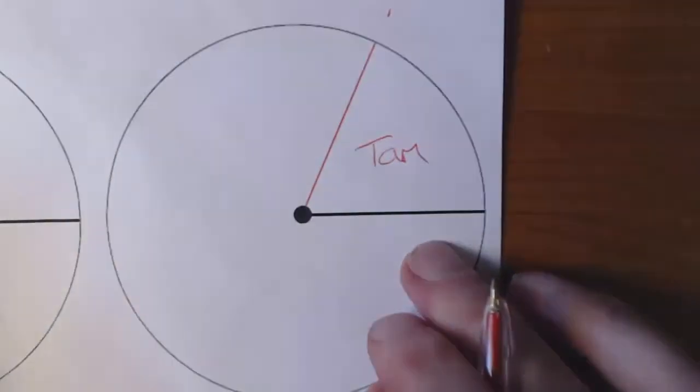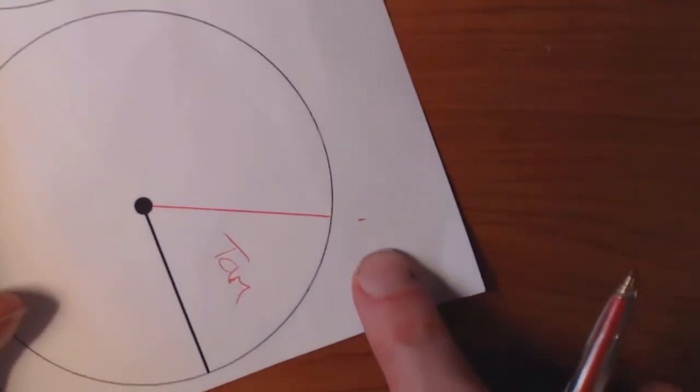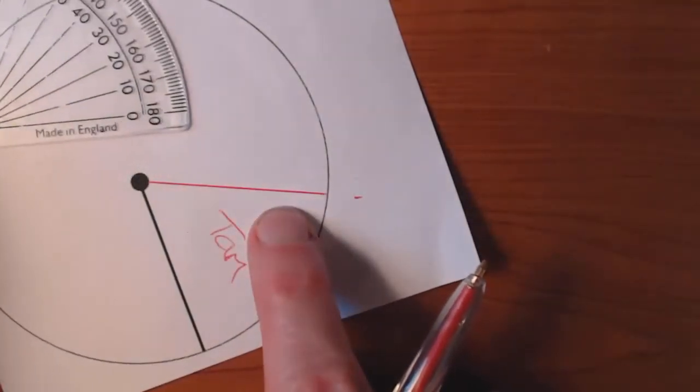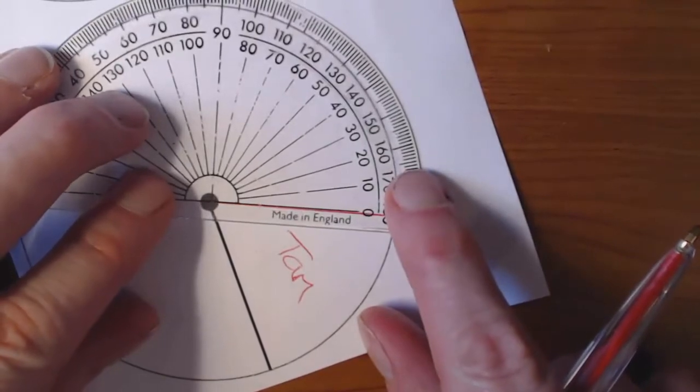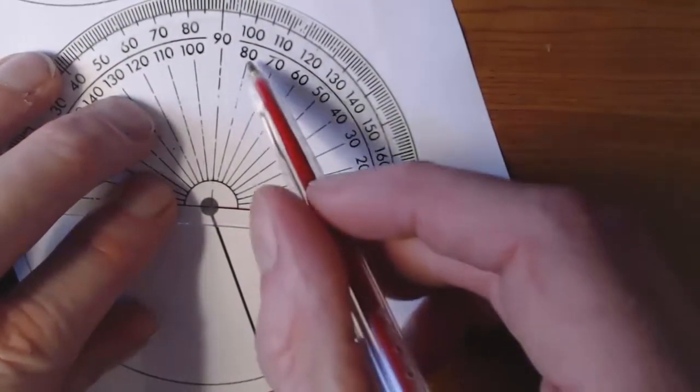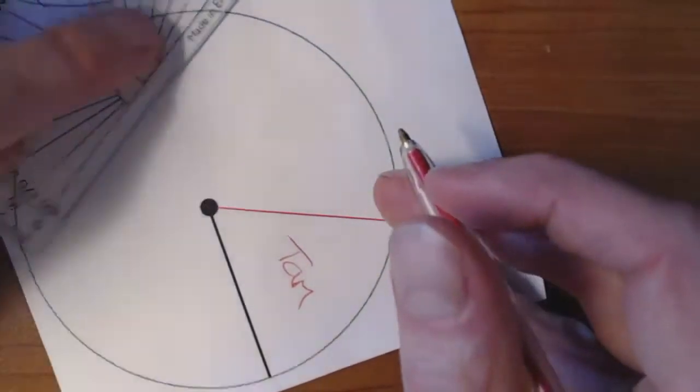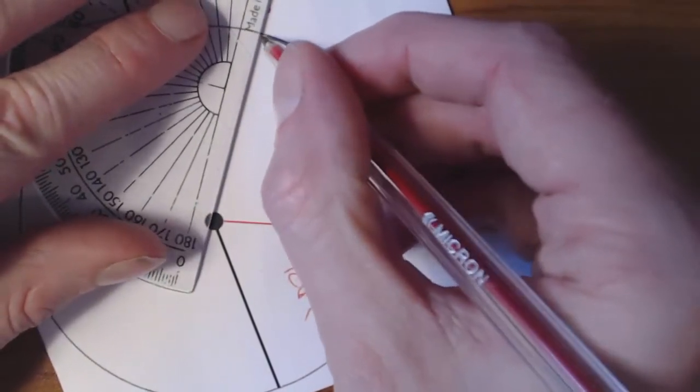Now what I then do is I turn it clockwise again and I use this as my next base, and this is for Franko. Franko got 78 degrees. So he got more than Tam. So 78, so I look in the inside and mark out 78. Now I'm using a big pen so it may not be the most accurate in the world.